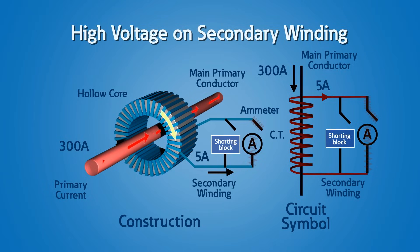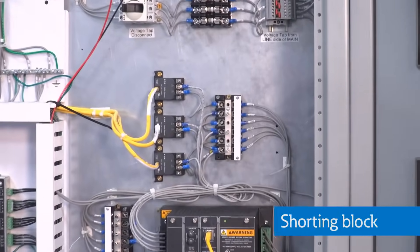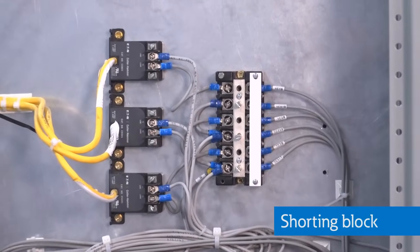But even though the current steps down 300 amps to 5 amps, the voltage will step up on the secondary winding. An open circuit on the CT secondary winding can have dangerously high voltage of thousands of volts. When CTs aren't in use, they should always have their secondary winding shorted for safety by using a shorting block or a temporary jumper.